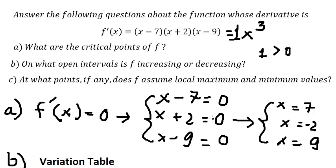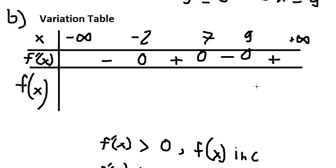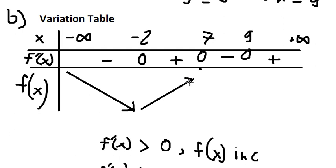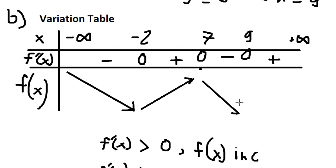That is the answer for question B. For question C, we need to find the local maximum and minimum. Because the function is decreasing before this point and increasing after, we can see the function goes down and then back up.